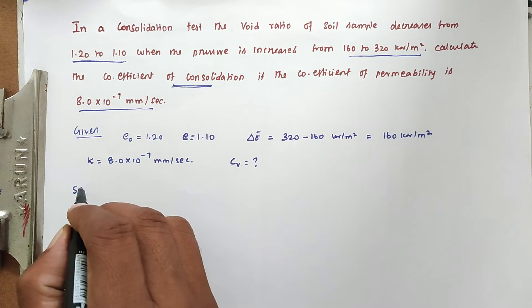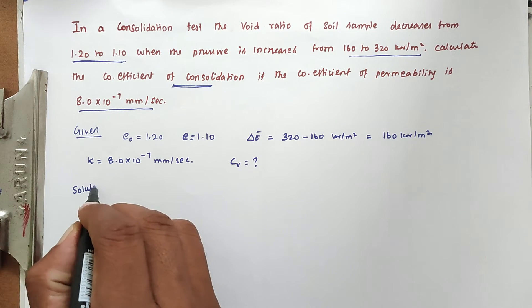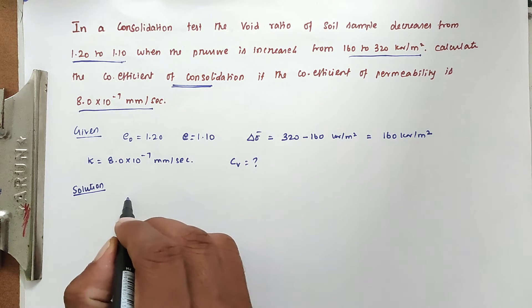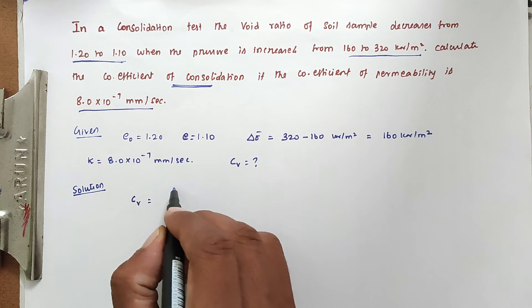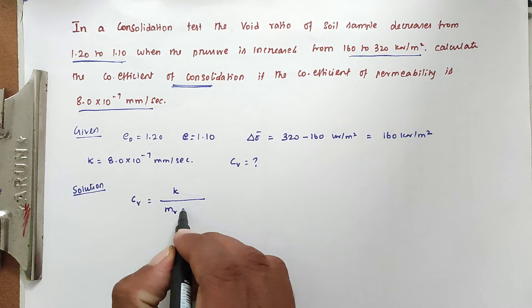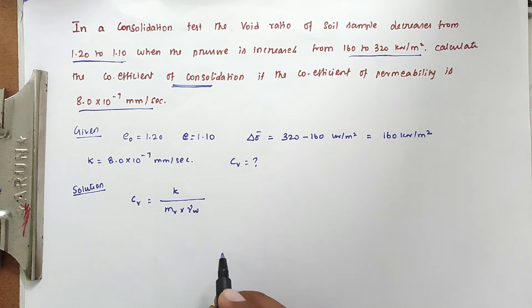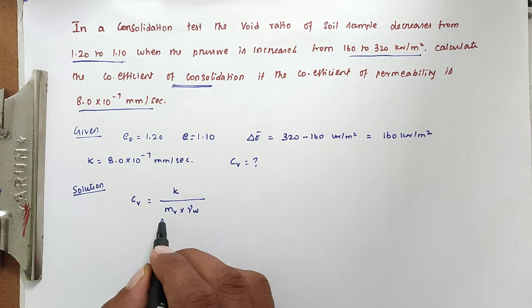First thing, the formula for coefficient of consolidation: Cv equals k divided by mv × γw. From that, we have to find out the mv value, that is coefficient of volume compressibility.